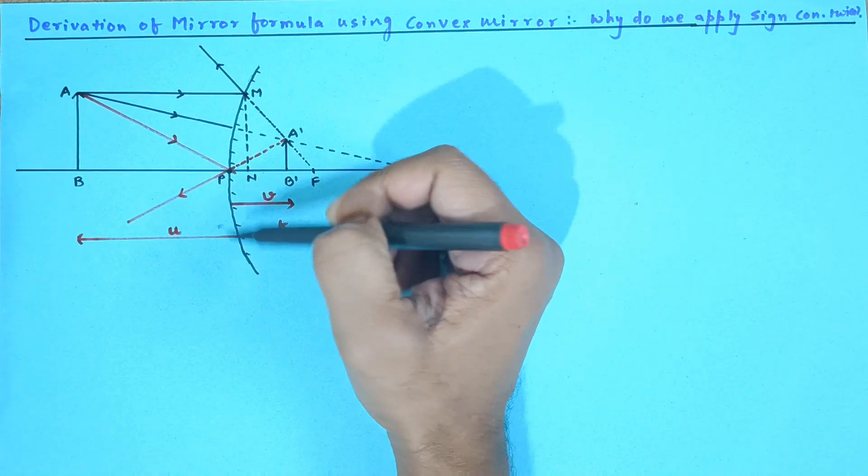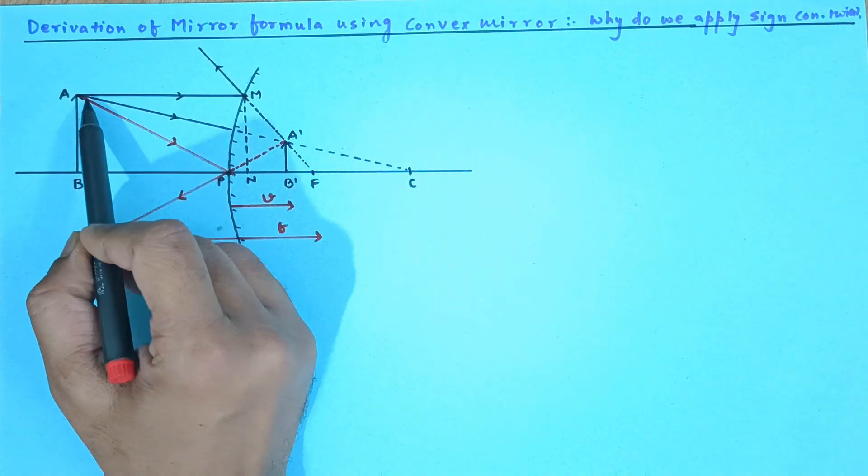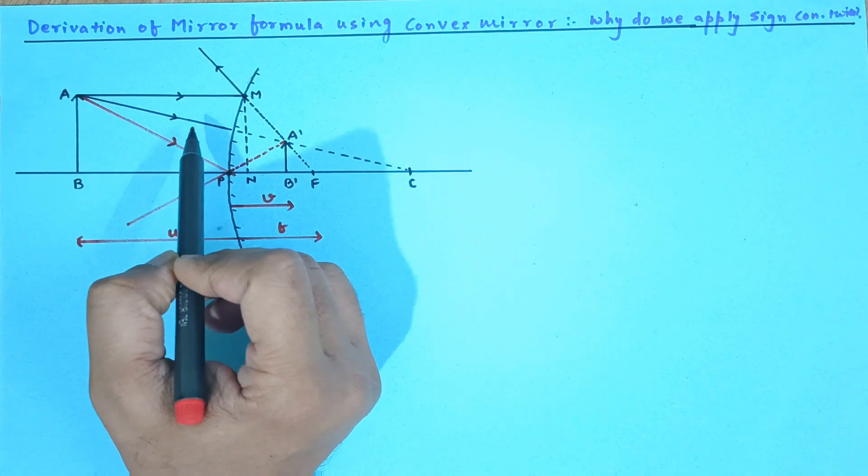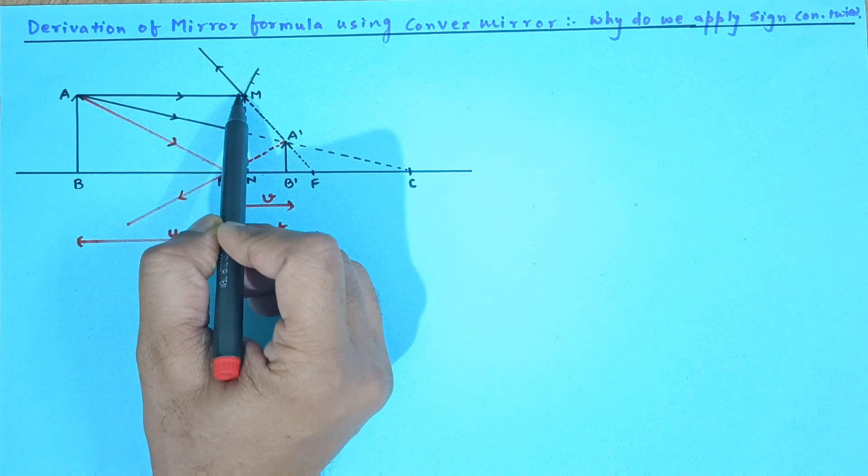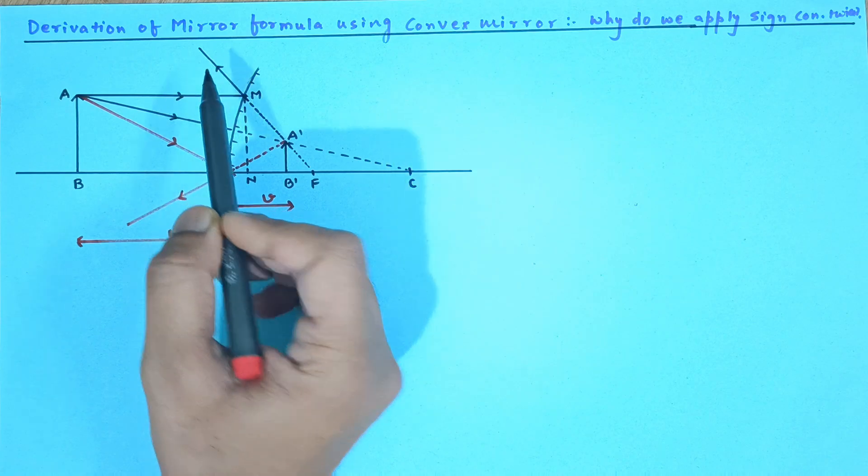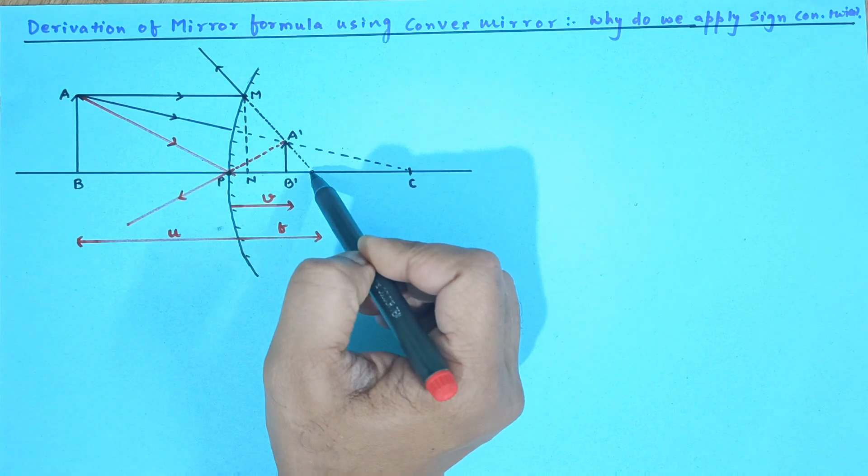Here we have a convex mirror and this is the object on the principal axis. These are three rays and I am going to consider one ray which is parallel to the principal axis and then it diverges in such a way that if you extend it backwards you get the focus.